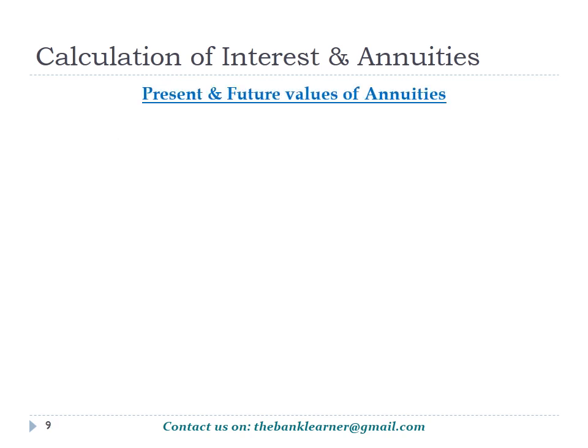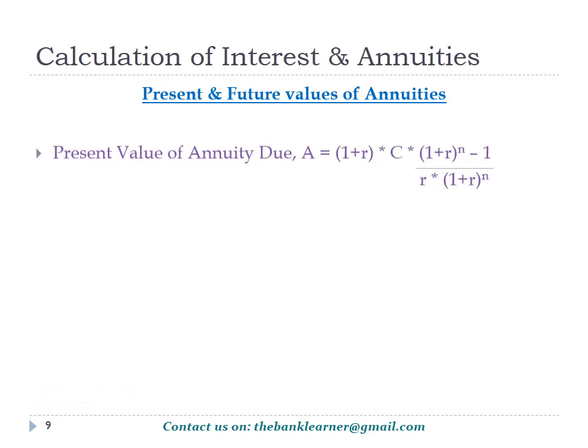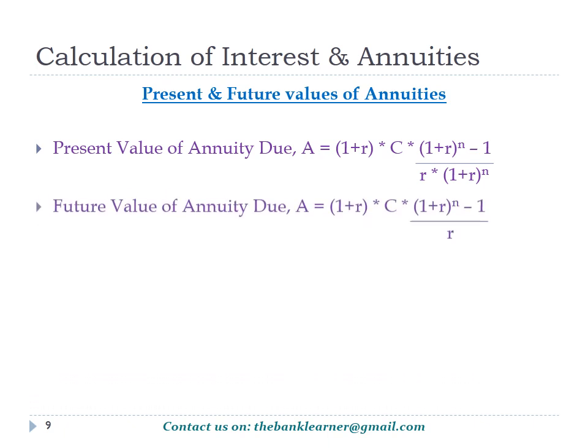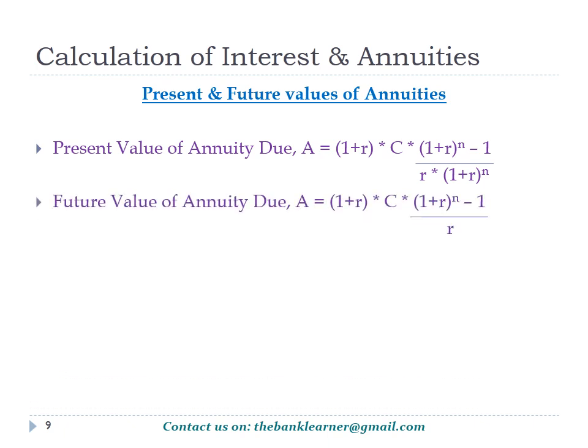In case of annuity due, the present value is calculated as A = (1 + R) × C × ((1 + R)^n − 1) / (R × (1 + R)^n). By looking at the formulae, we can clearly see that when we multiply (1 + R) with the present and future values of ordinary annuity, we get the present and future values of annuity due respectively.